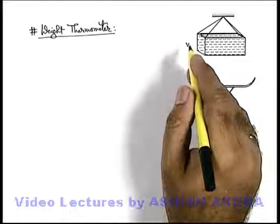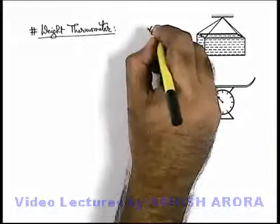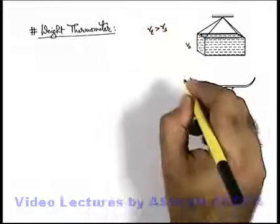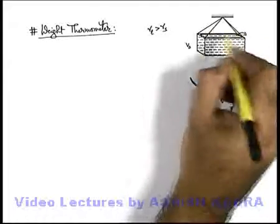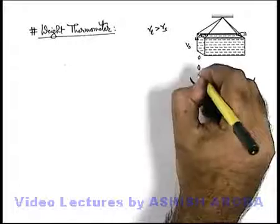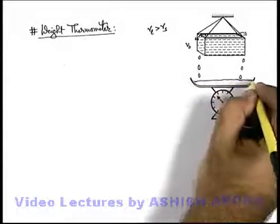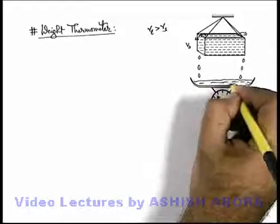And if its temperature increases, then as we know gamma of liquid is always more than gamma of solid, so liquid will overflow. And due to overflow the liquid will fall into the weighing machine.